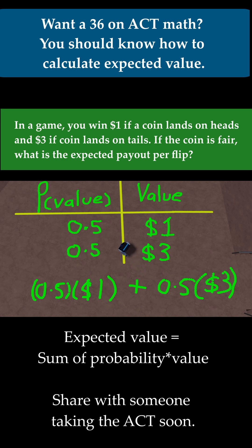And now we can just compute this. 0.5 times $1 is $0.50. Let me just write that here. And then 0.5 times 3 is $1.50. And 1.5 plus 0.5 is $2. This is in dollars, so therefore, the expected payout per coin flip is $2.